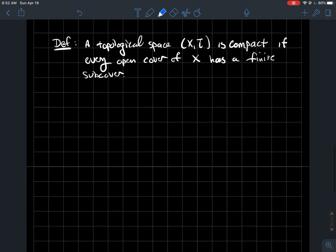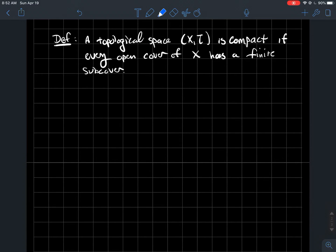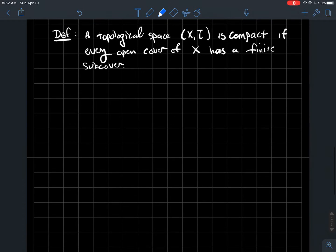Now let's tie this finite intersection property into the concept of compactness. To remind you of compactness, a topological space (X, τ) is compact if every open cover of X has a finite subcover.